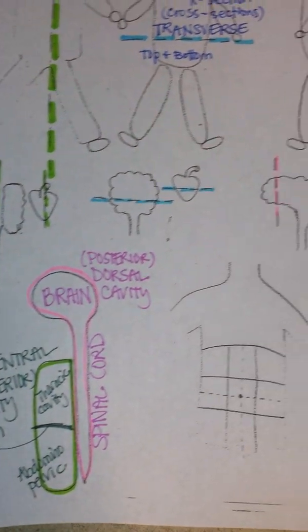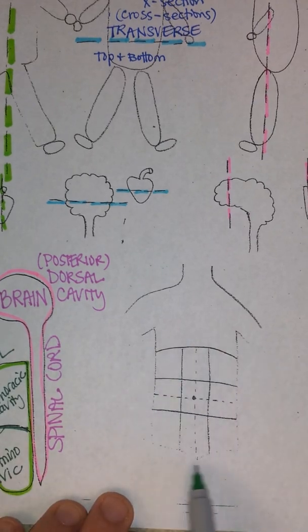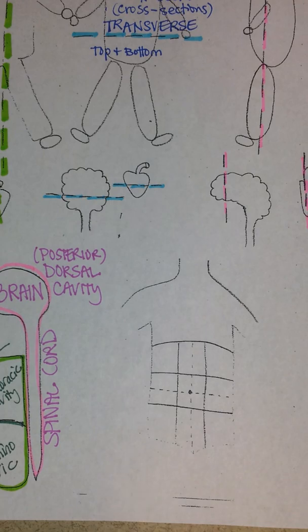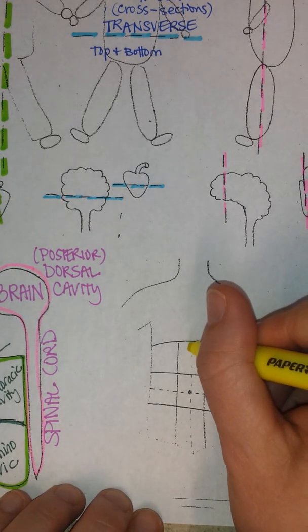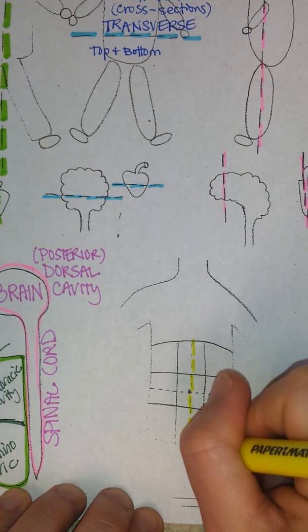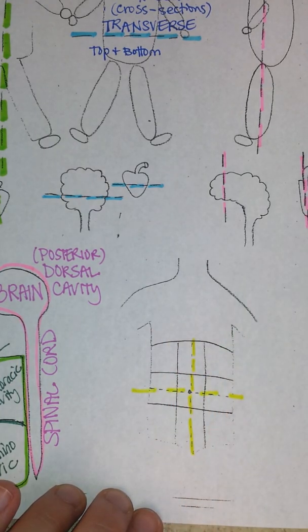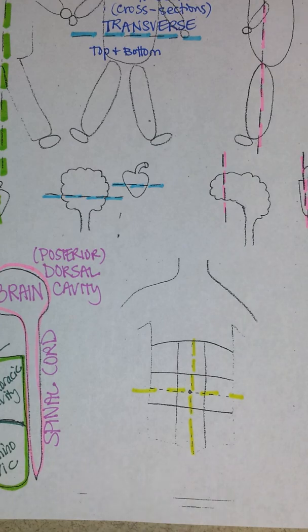Now let's go over here and look at the quadrants. Mostly I just want to highlight in yellow the four different quadrants. It seems like in clinical settings they just talk about these four quadrants and not so much the nine regions that you'll find if you're looking at an anatomy book.